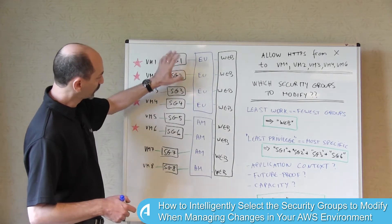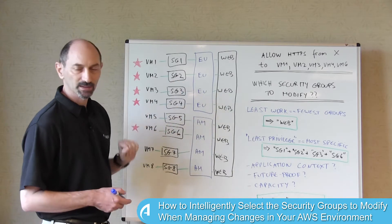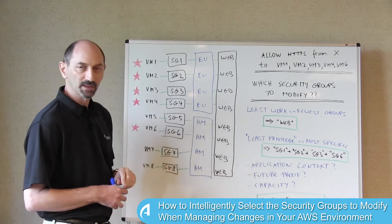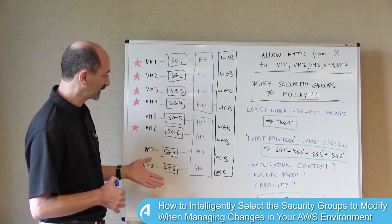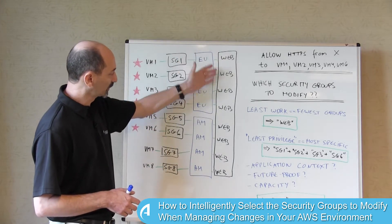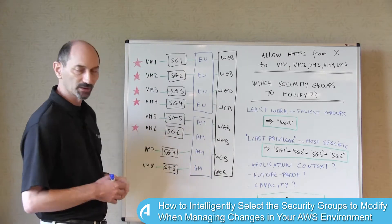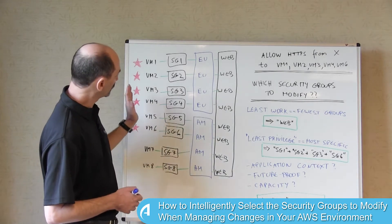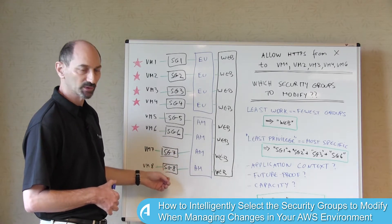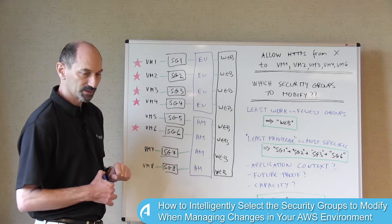We have another set of security groups in blue that are regional. At the top there is a security group for the European instances associated with VMs one to four, and then the security group for the American instances, VMs five to eight. We also have one very broad security group labeled 'web' that is associated with all the VMs, because they're all running web servers of various types. So each VM has really three security groups associated with it: its own special security group, the regional security group, and then the broad security group for the whole set of web servers.